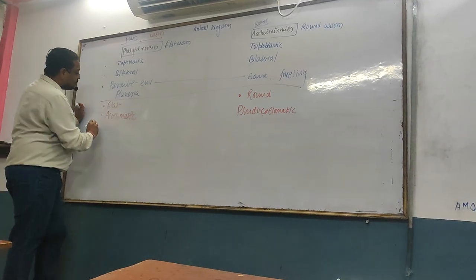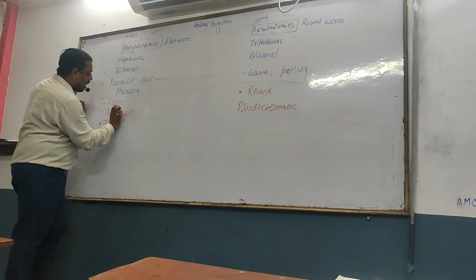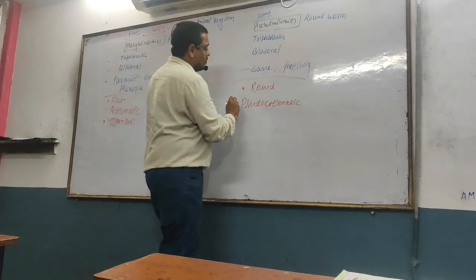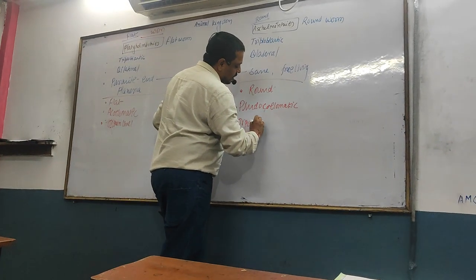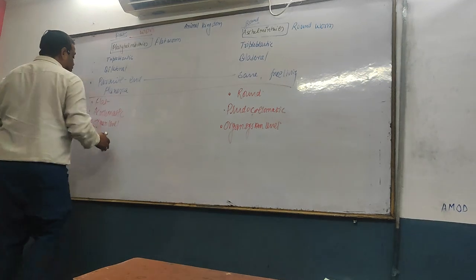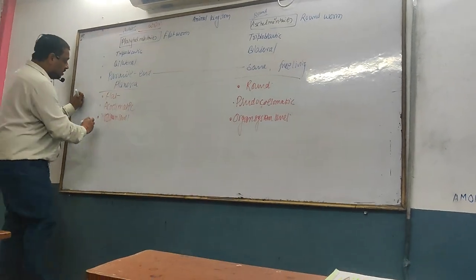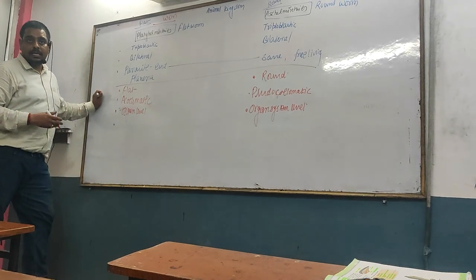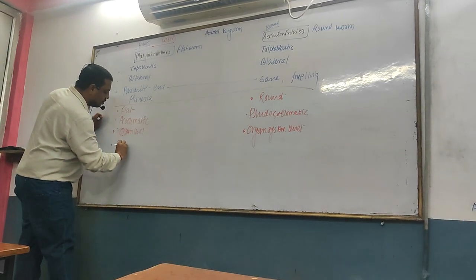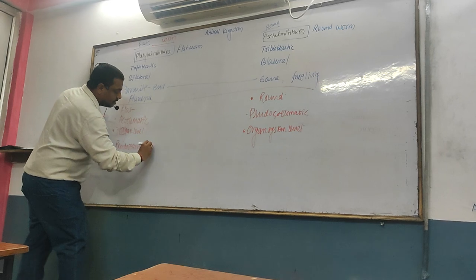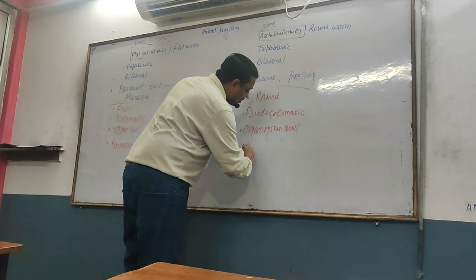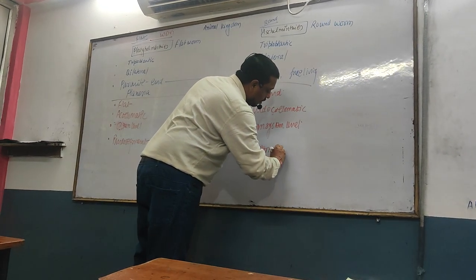The other thing — if you look at the organization, it is called organ-level organization. If you look at the organization, it is called organ-system level organization. How is the organization? Non-segmental.